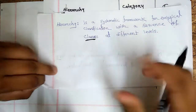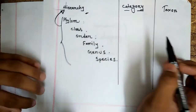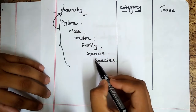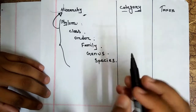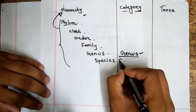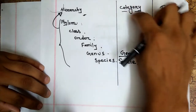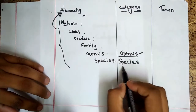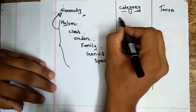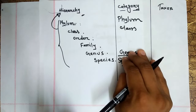That's all about hierarchy. Now we move to the term category — what is category? In hierarchy classification, we have different kinds of ranks or classes. Each class is known as a category. For example, genus itself is a category, and species itself is a category. Different categories make up the hierarchy system. So category is just an individual piece, an individual rank of hierarchy. For example, phylum is a category, class is a category, and so on.